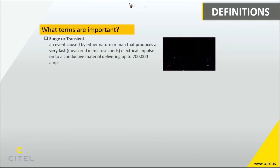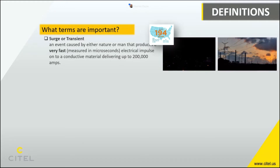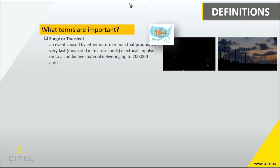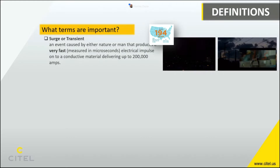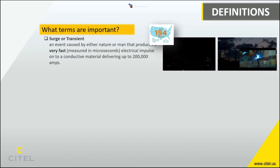Lightning is external to facilities but can have an impact from very far away. It's not considered frequent compared to switching events, but according to Vaisala's global lightning report there were 194 million lightning events in the U.S. last year. Switching is a man-made event — it can be both internal and external. Utility switching or a neighbor's equipment are examples of external events; inductive loads turning on and off are sources of internal transients. About 80% of surges are switching transients and 20% are lightning.